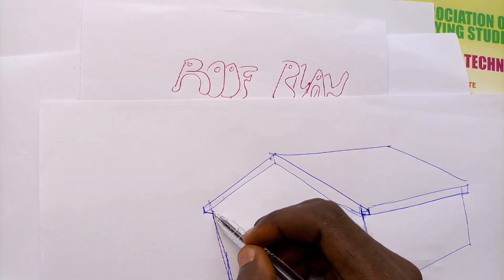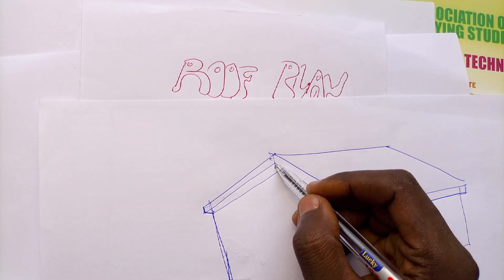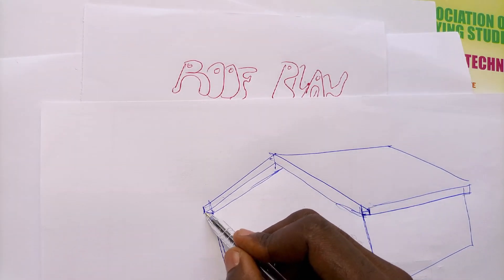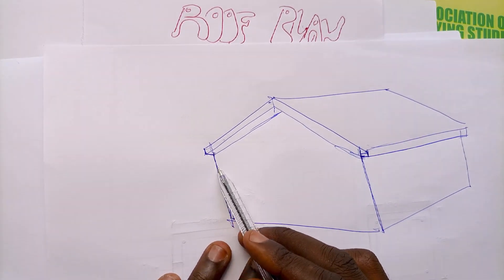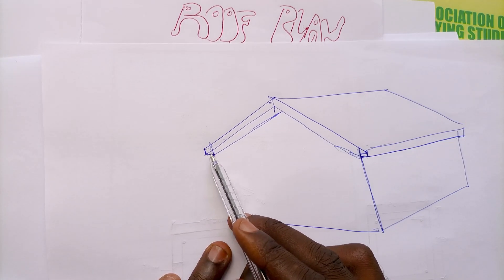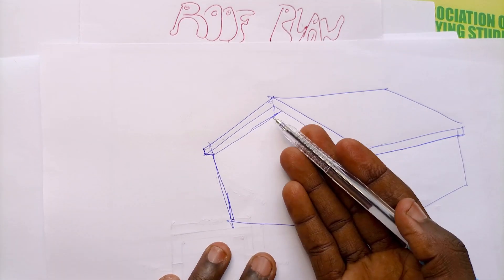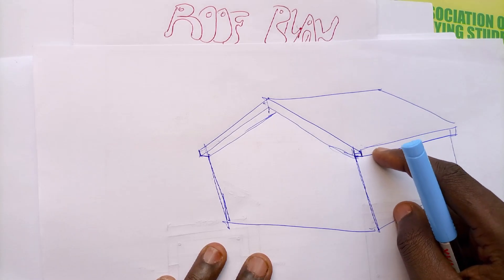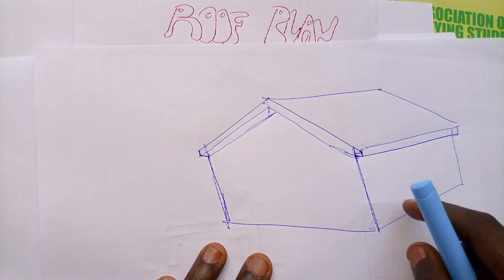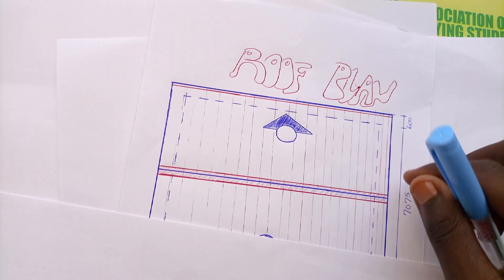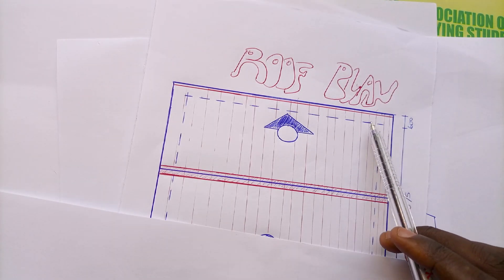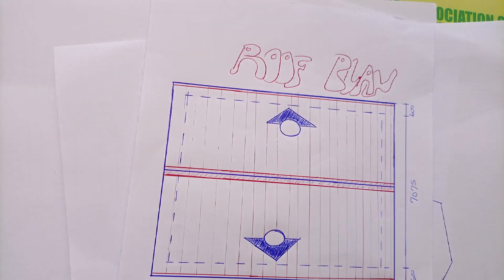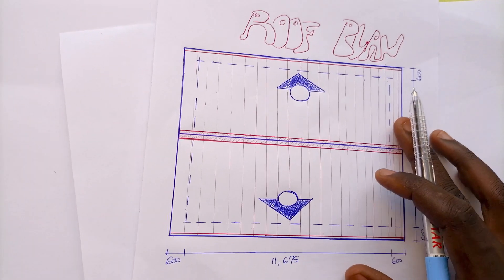With a gable roof, the wall does not commence from the edge — the wall starts from somewhere inward, so there is a projection of 600mm away from the wall on this side, and also 600mm away from the wall on the other side. That is why we have 600 away from each part of the wall. This is what the 600 dimension simply indicates on the roof plan.